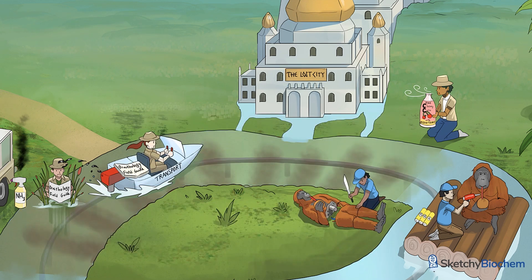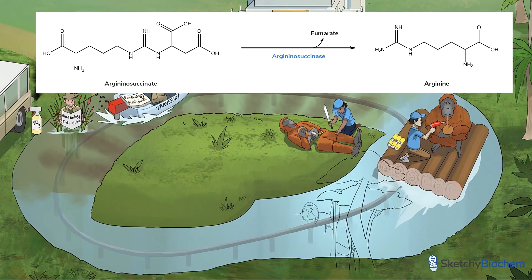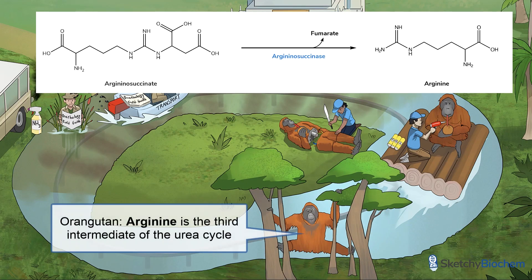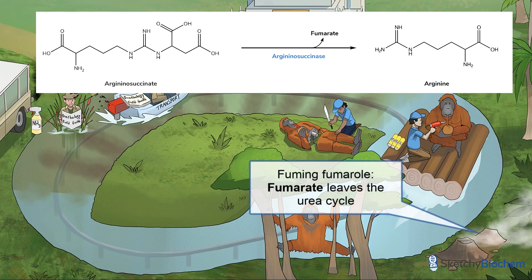Another park worker is using a machete to cut the insides of a broken straw-sucking orangutan — that's arginosuccinate lyase, which cleaves arginosuccinate into arginine and fumarate. Please turn your attention to the trees where you'll see a fully functional orangutan that represents arginine. Over there in the corner is a fuming hot fumarole — which is fumarate. A fumarole is an opening in the Earth's surface that emits hot, fuming gases.